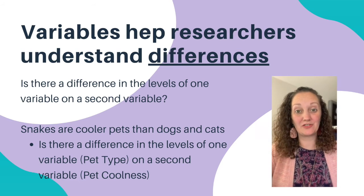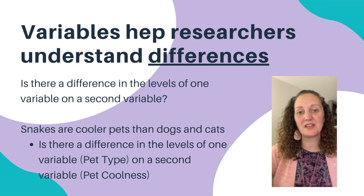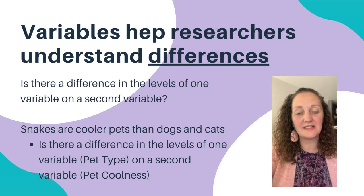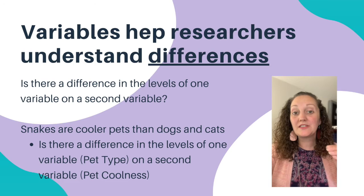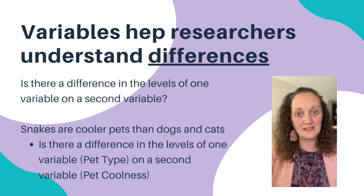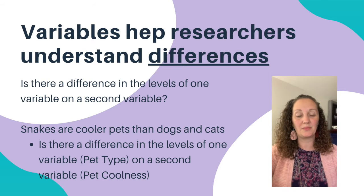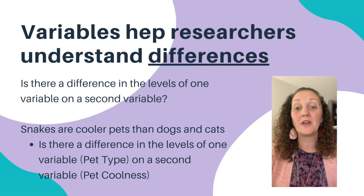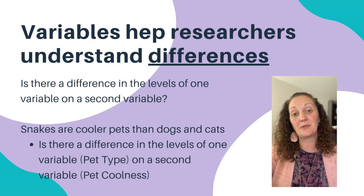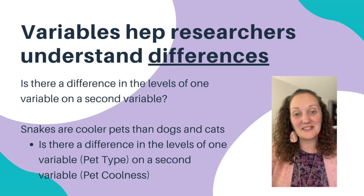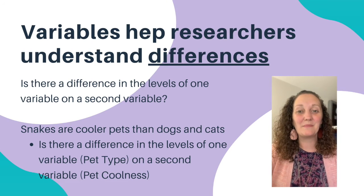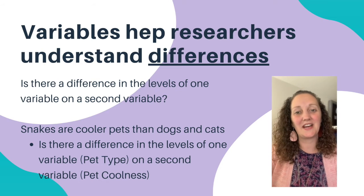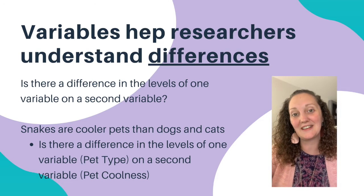Variables help researchers understand differences and relationships. When we talk about differences, variables help researchers understand if there is a difference between the levels of one variable on a second variable — so if there's a difference in the levels of the independent variable on a dependent variable. In several videos I make, I talk about pets, different pet types, and pet coolness as my variables often in hypotheses.